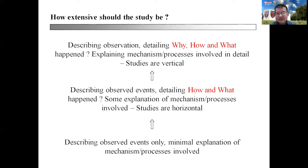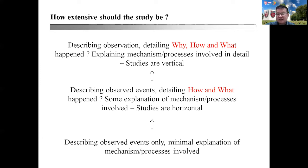If you are writing a PhD dissertation, there should be more emphasis on the 'why' aspect. Apart from describing observations, you need to detail why, how, and what happened — with the focus on mechanisms and processes involved. This will determine how much material to include in your report, how in-depth your discussion will be, especially for vertical studies, and ensures that you are submitting material appropriate for the degree you are pursuing.